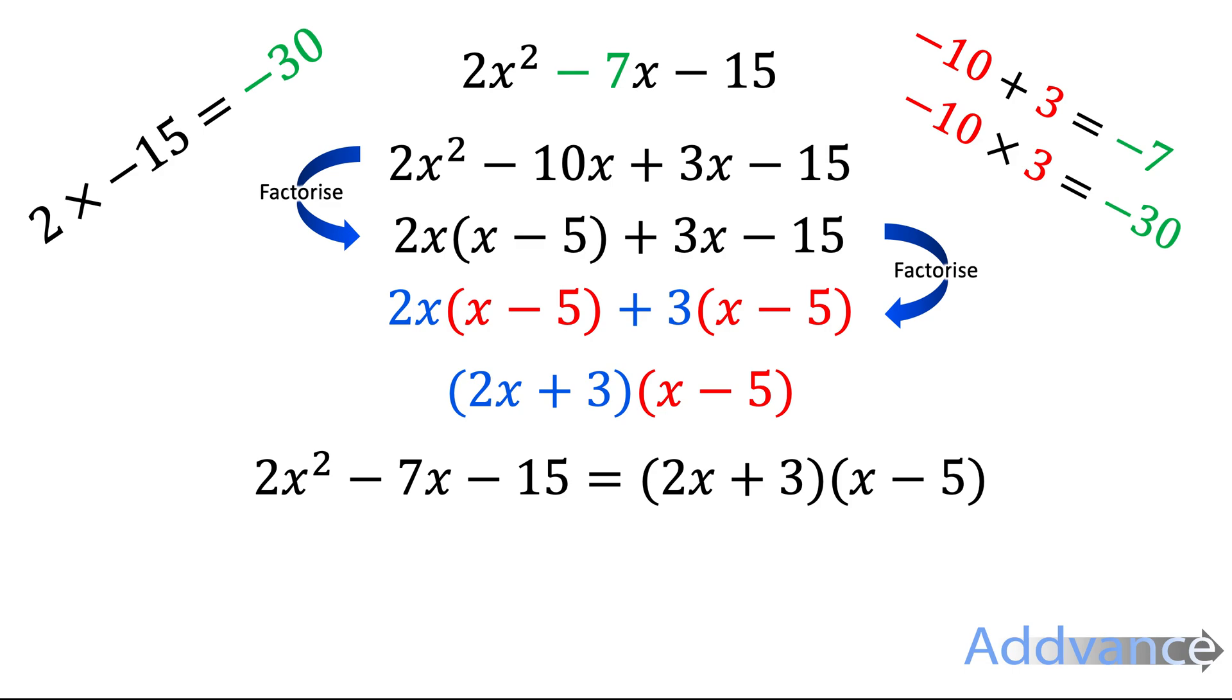Now we can check that this works by expanding the brackets afterwards. So if you multiply out that bracket using our crab's claw method, you should get 2x squared minus 10x plus 3x minus 15, which does simplify to 2x squared minus 7x minus 15. And so we know we've done it correctly. And that's a nice easy check at the end to expand the brackets afterwards to make sure it is the same.